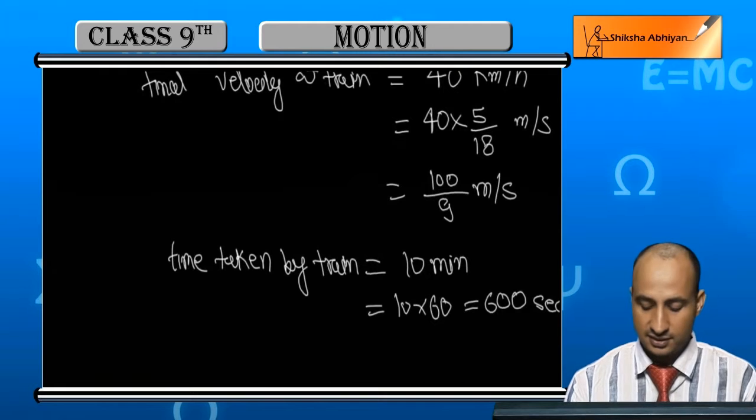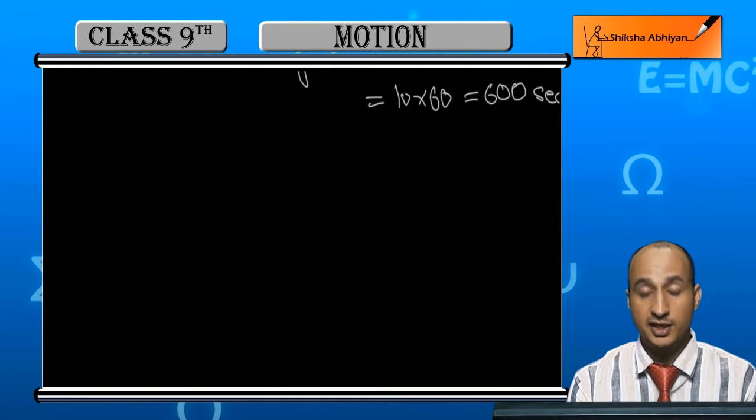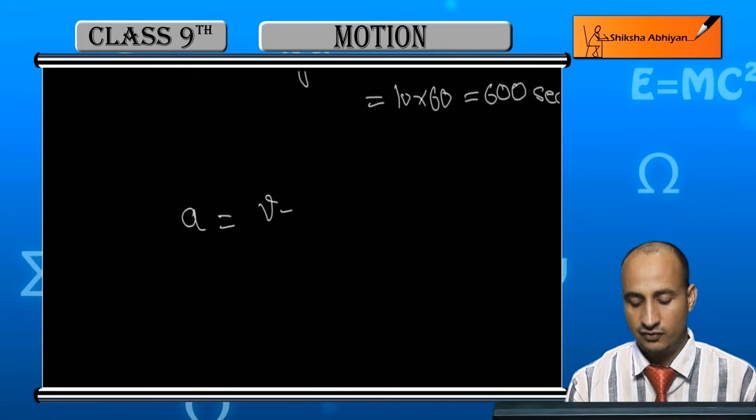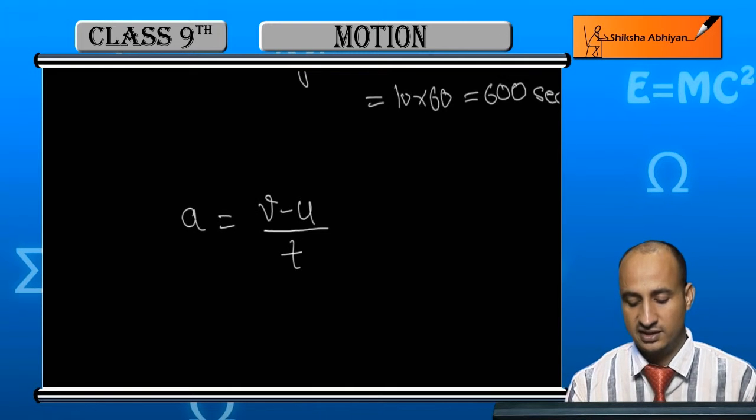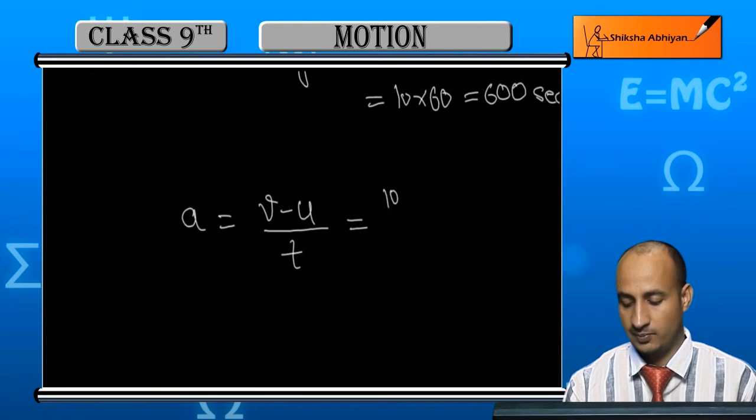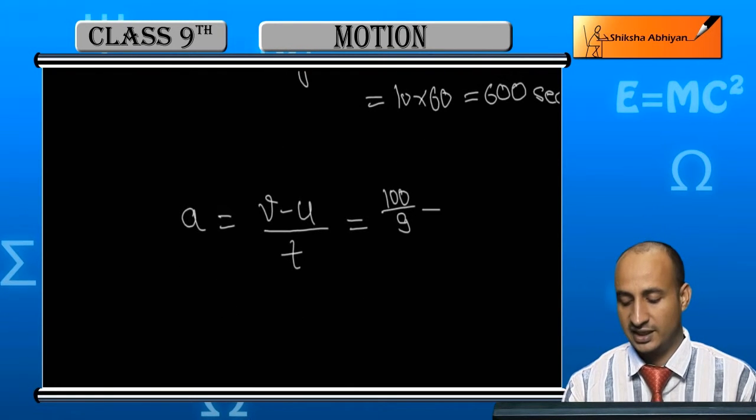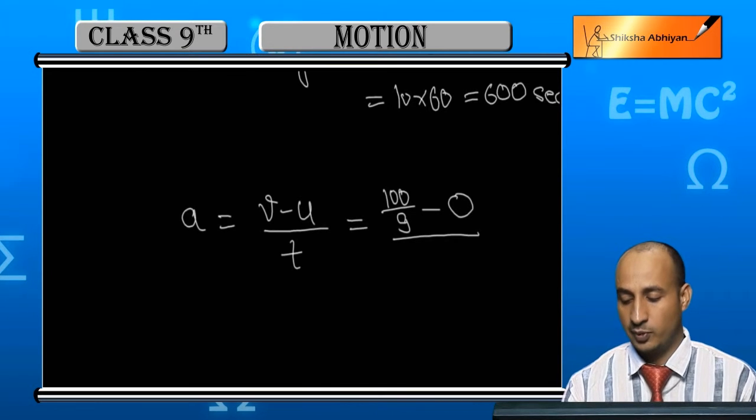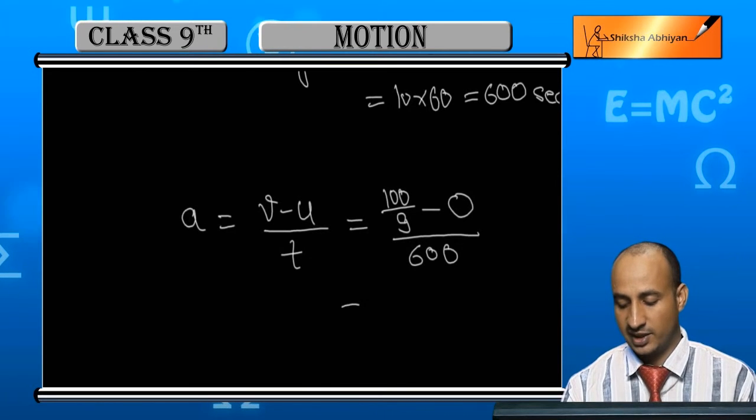Now students see, we have the rate of change of acceleration. Acceleration is equal to V minus U upon T. That is V here, V is 100 upon 9 minus U, how much? Zero, because starting. The rate of change upon time is 600.